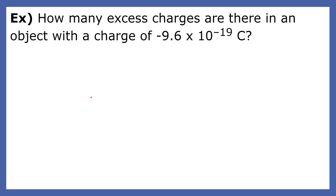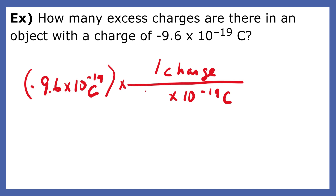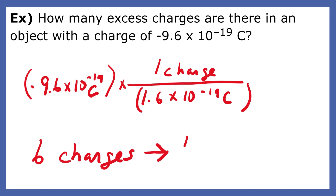To find the number of charges, we need to make a conversion factor. Since each elementary particle has a charge of 1.6 times 10 to the negative 19th coulombs, when we multiply by the conversion factor, we get 6 elementary charges. Furthermore, since this charge is negative, you must have 6 extra electrons than protons.